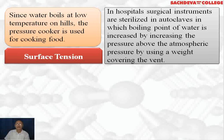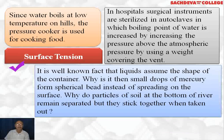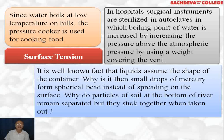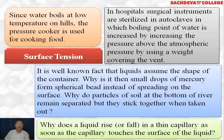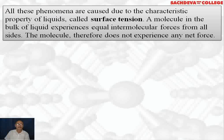Water with a boiling point higher than 100°C, obtained at higher pressure, is called superheated water. The next property of liquids is surface tension. It is a well-known fact that liquids acquire the shape of their container, but small drops of liquid are spherical in shape. Why do particles of soil at the bottom of a river remain suspended but stick together when taken out? Why does a liquid rise or fall in a thin capillary? The answer to all these questions is surface tension.